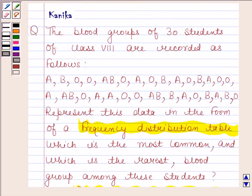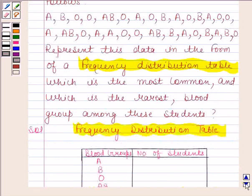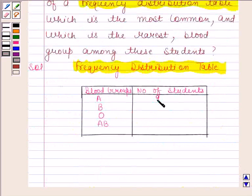Now let's calculate how many students have A blood group. 1, 2, 3, 4, 5, 6, 7, 8, 9. So now we will write 9 in this column.